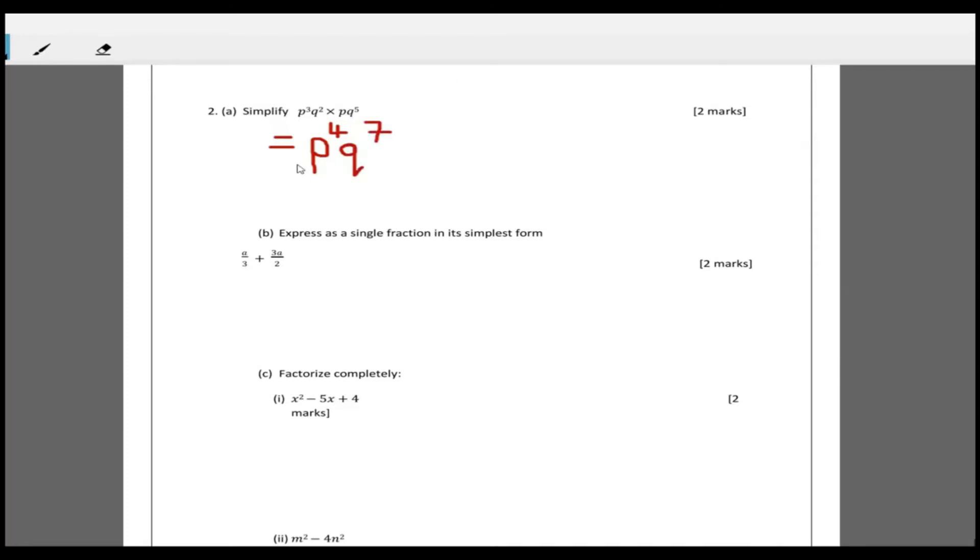Now this is another two mark question. It says express as a single fraction in its simplest form. So you have a over three plus three a over two. First thing you find the LCM - the LCM between three and two is six. Then three into six goes two times, so this becomes two a, plus two into six goes three times, so this becomes three times three a which is nine a. So two a plus nine a is eleven a, that's eleven a divided by six.